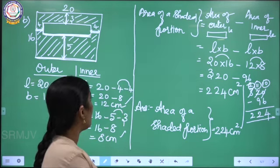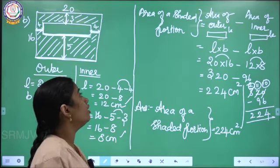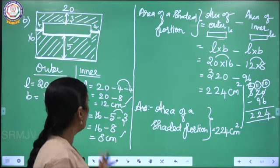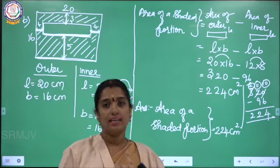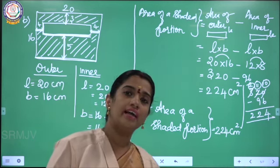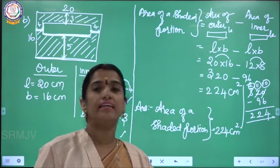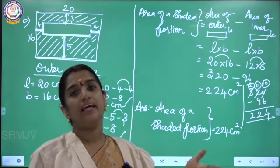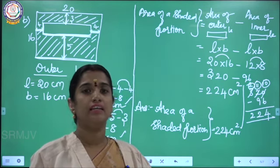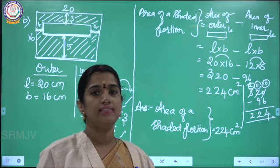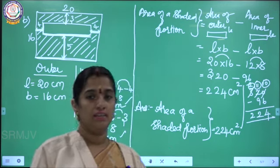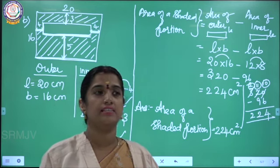Like this, you have to find the area of the shaded portion. What you have to do? Outer rectangle minus inner rectangle. Find the length and breadth for the outer rectangle, and find the length and breadth for the inner rectangle. Multiply both and then subtract — you can get the shaded part. Thank you, children. We will see in the next class.